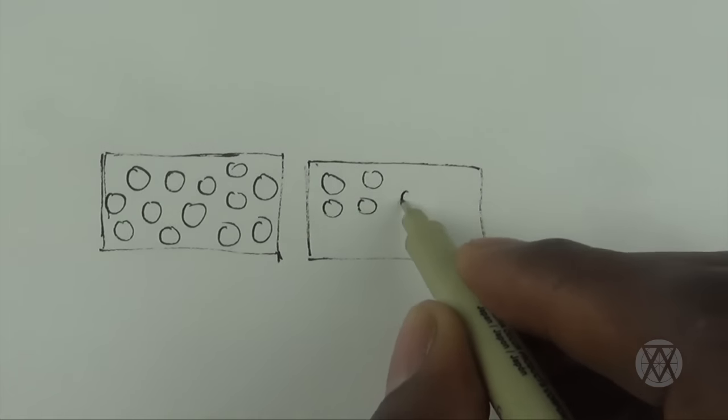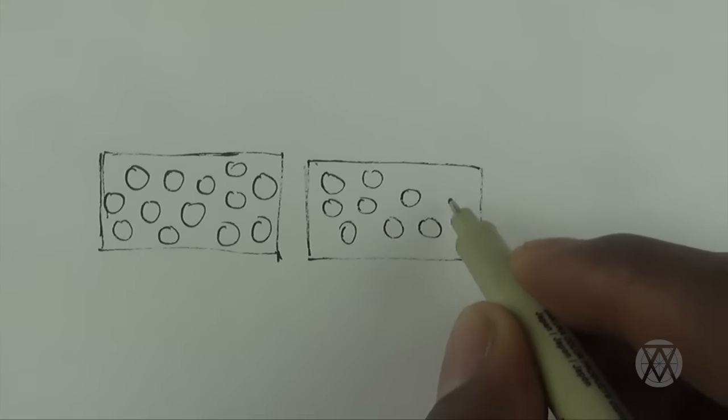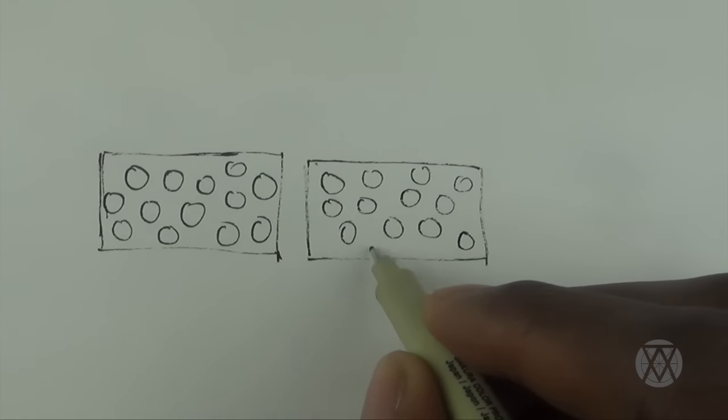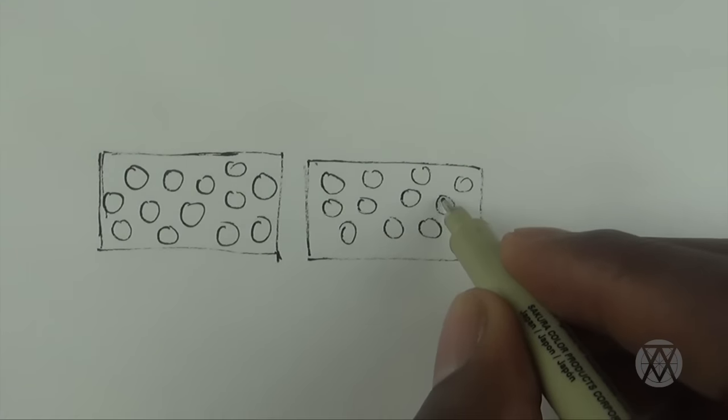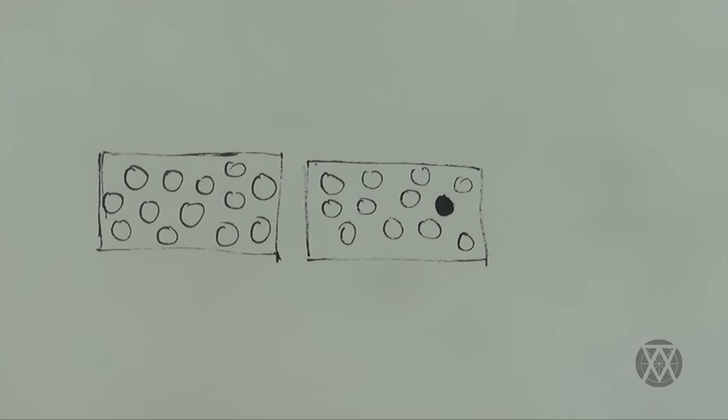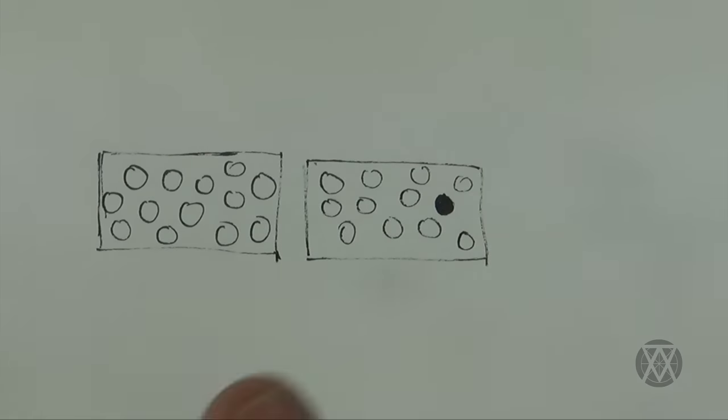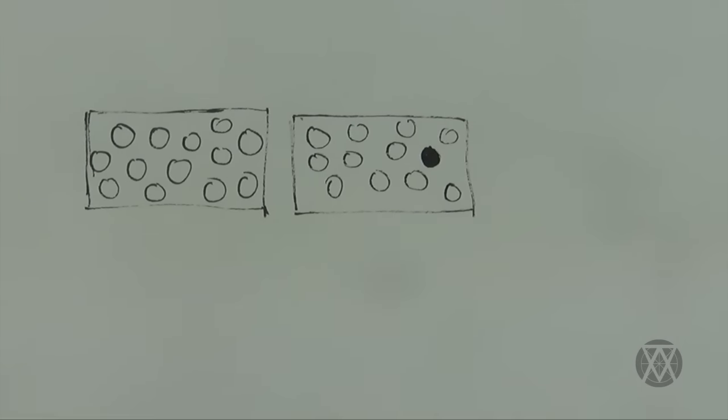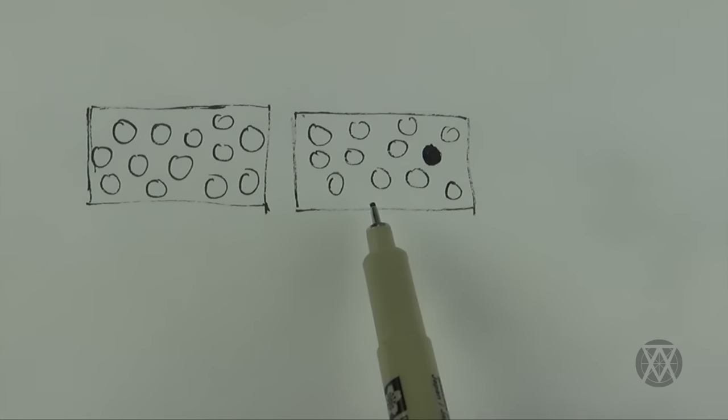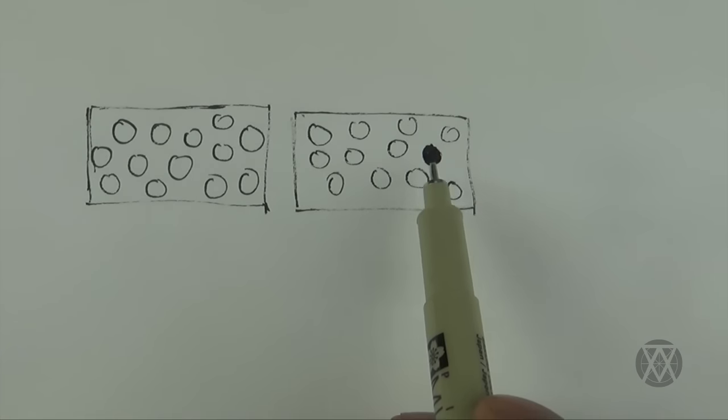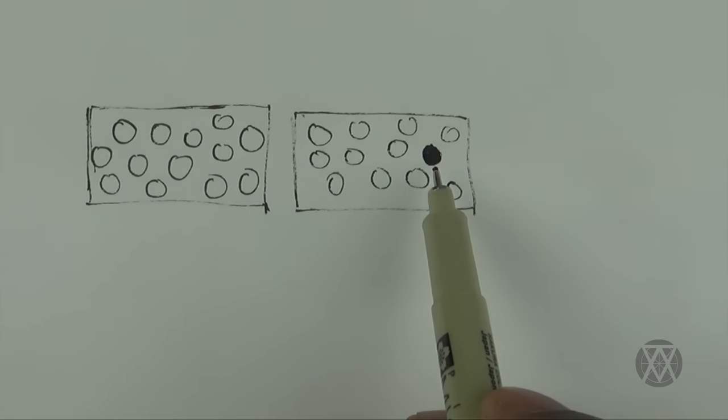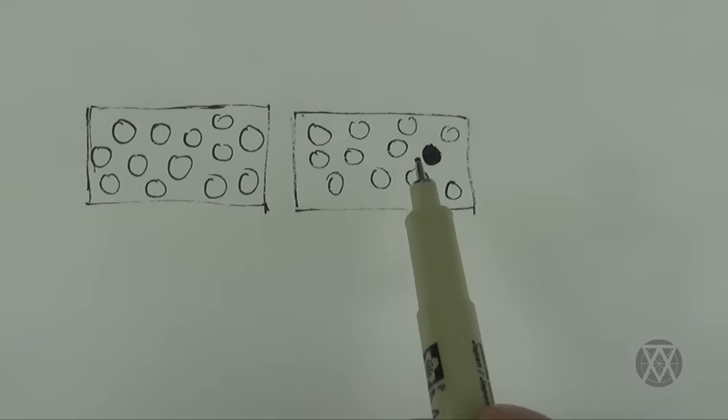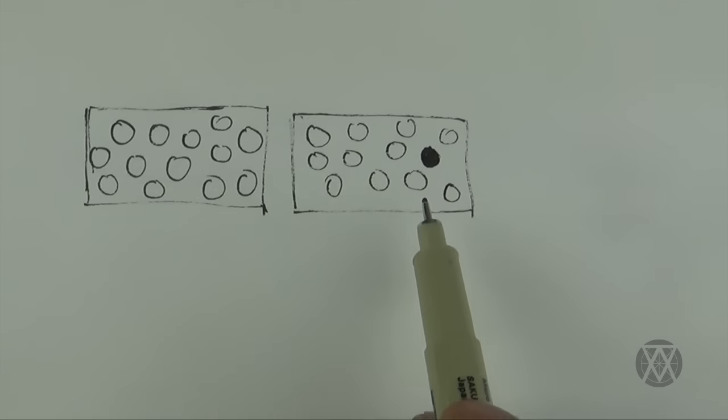Here we have the same circles, but now let's make one of them black. I have just created emphasis. Very simple example, yes, but it's important to be aware of this. In other words, I'm directing your attention to this. This is what you spend most time looking at.